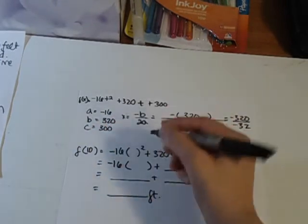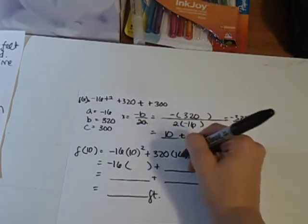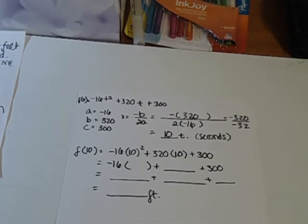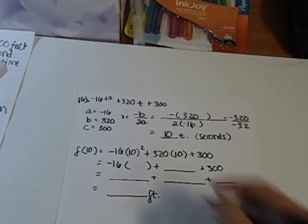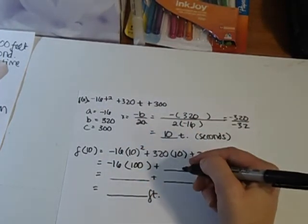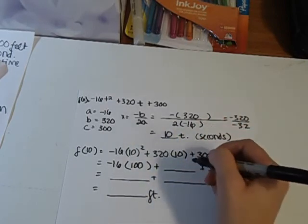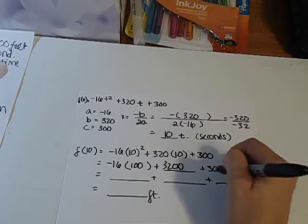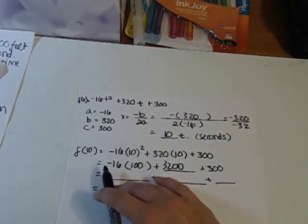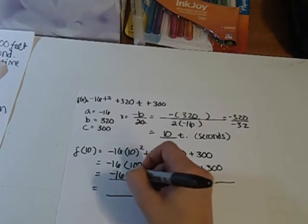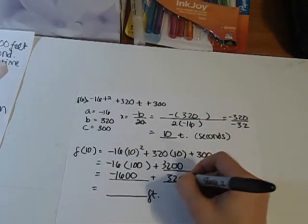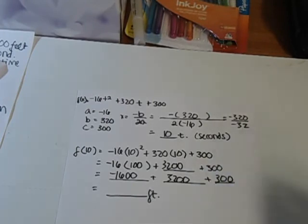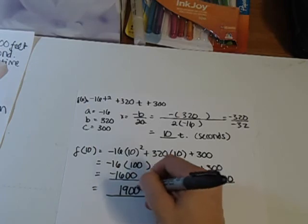You would put 10 here, and multiply that out. You would get 100 here, 3200 here, and 300. Multiply it out - negative 1600, 3200, and 300. When you add them all together, you have the resulting 1900 feet.